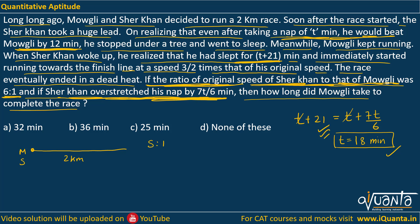Let's assume the speed of Sher Khan is 6x and the speed of Mowgli is x. We want to find out how long Mowgli took to complete the race — that is, we need to find the value of 2/x. We were clearly given that on realizing he could take a nap of T minutes and still beat Mowgli by 12 minutes, the time by Mowgli minus time by Sher Khan should have a difference of 12 minutes. This is the normal case where he naps for T minutes at normal speed.